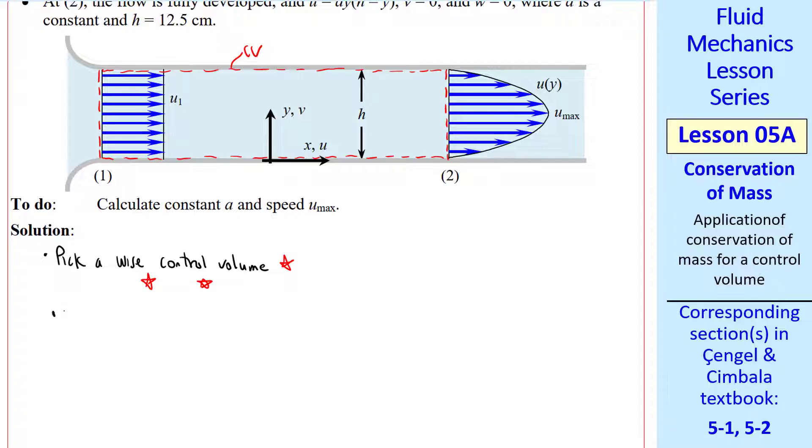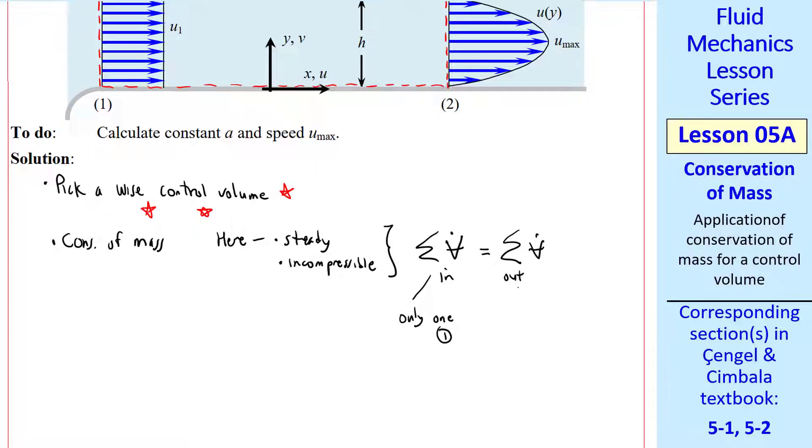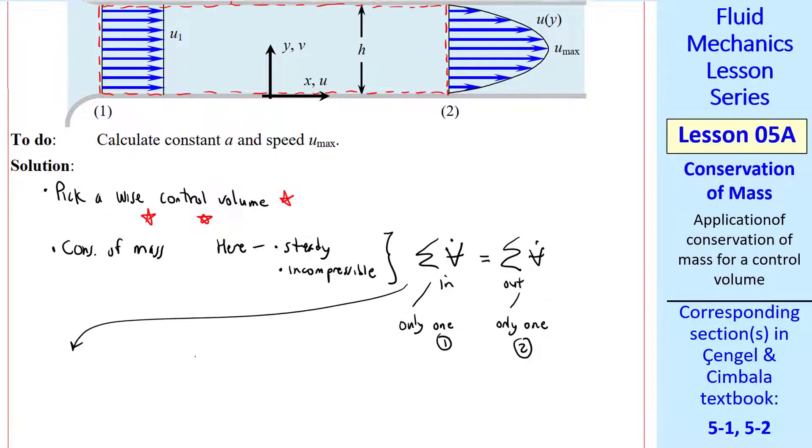Now we pick an appropriate conservation of mass equation. Here the flow is steady and incompressible, so we can use the volume flow rate form of conservation of mass, sigma V dot in equals sigma V dot out. There's only one inlet, 1, and there's only one outlet, 2.